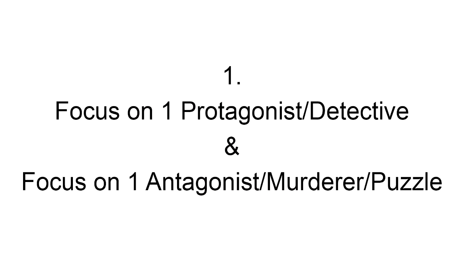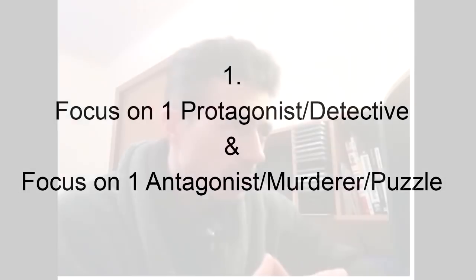So the first rule is you must focus on a protagonist — or one detective — and one antagonist, or one murderer. Now how do you do that? Well, first we have to learn how to write in the first place, and to do so we ask the master himself, Harlan Ellison.